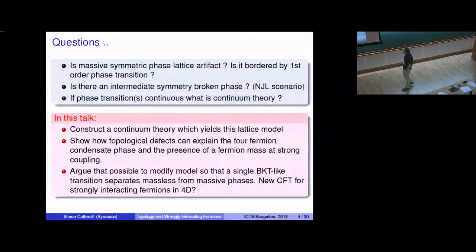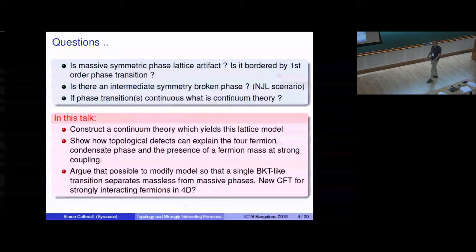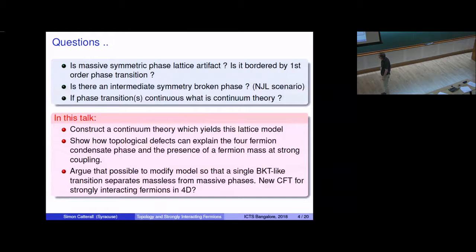So the question is, is this massive symmetric phase a lattice artifact? So if it is, it's not terribly interesting. Is it bordered by first-order phase transitions correspondingly? So if it's separated from the continuum region by a first-order phase transition, it's certainly a lattice artifact, and you're not really interested in it from the point of view of continuum field theory. I just hinted at the fact there may be two transitions here corresponding to the presence of an intermediate phase, which turns out to have broken symmetry. So we'll see that's an option in our continuum model, too. So that would be the standard NJL scenario. In fact, that kind of scenario has been seen in many lattice-four-fermion models going back many decades. So we'll see that indeed that is a possibility in this model, too.